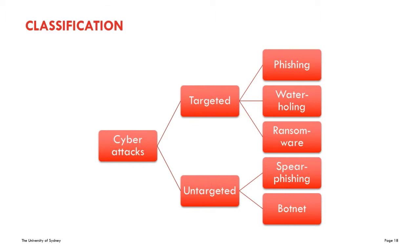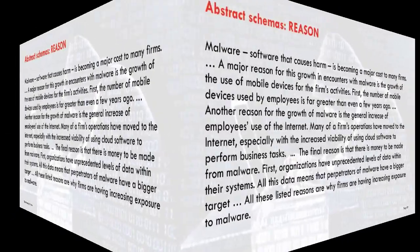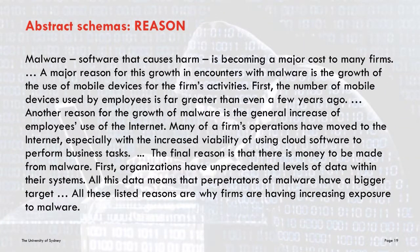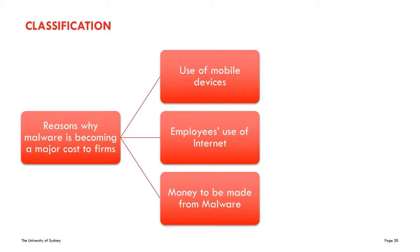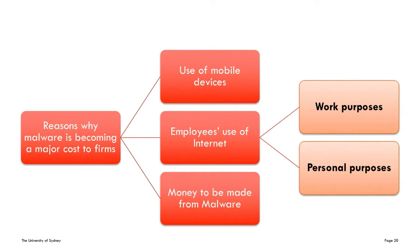When you come to writing your essay, it is helpful to decide on what you want your main organizing schemas to be. For instance, this writer has chosen the abstract schema of reason to organize their arguments as to why malware is becoming a major cost to firms. Other writers might have used the same organizing schema but come up with different reasons. Using a diagram like this can make these reasons clear before you start writing. You might find that at least one of your reasons requires further organization. For example, for reason 2 — employees' use of the internet — it might be useful to further distinguish between employees' use of the internet for work or for personal purposes.